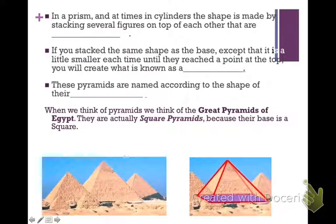In a prism, and at times in cylinders, the shape is made by stacking several similar figures on top of each other. If you imagine a pyramid's square base, and you take layers of squares building them up, making them smaller as you go until it gets to the top vertex — if you stacked the same shape as the base, each one a little smaller, until they reach the point at the top, you would create what is known as a pyramid.